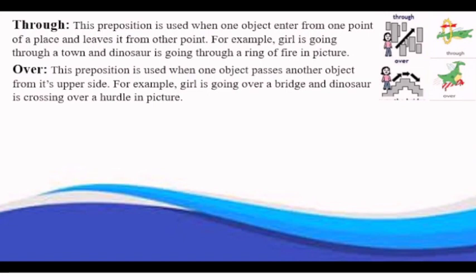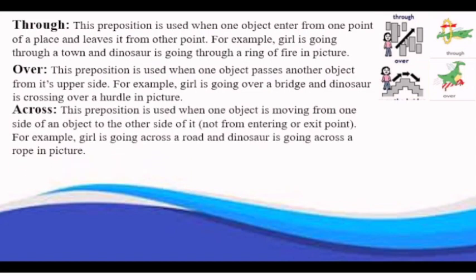Across is used when one object is moving from one side of an object to the other side of it, not from entering or exit point. For example, girl is going across a road, and dinosaur is going across a rope, in picture.